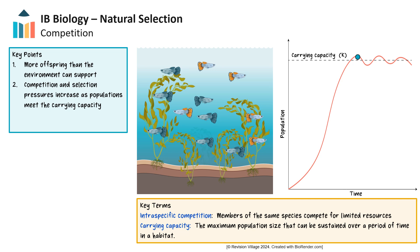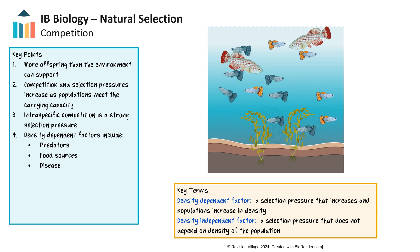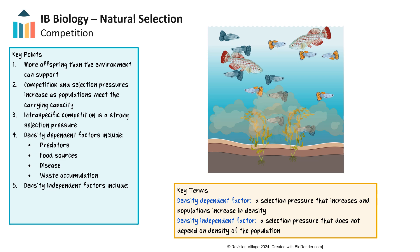Although some species do compete against each other, leading to some fascinating examples of co-evolution, the strongest selection pressure is most often intraspecific competition rather than interspecific competition. With intraspecific competition, typically the denser the population becomes, the stronger the selection pressures as members of the populations compete for increasingly dwindling resources. The selection pressures that gain in intensity when population growth increases are called density-dependent. Examples of density-dependent selection pressures include predators, food sources, the spread of disease, and waste accumulation. Sometimes selection pressures are not density-dependent, and those typically tend to be environmental — for instance, if there's a change in temperature, pH, habitat destruction, or other factors. This can be a selection pressure, as some individuals may not tolerate the changes.